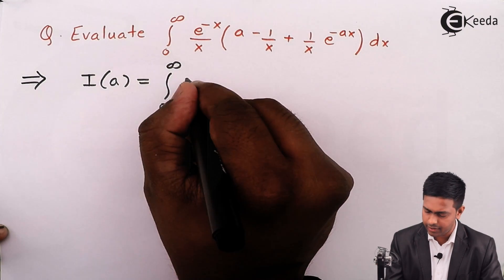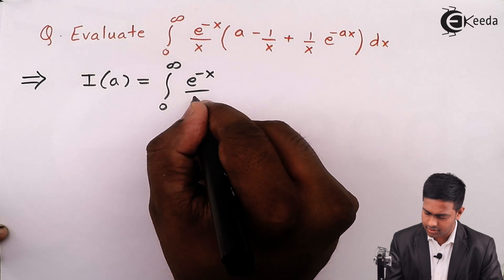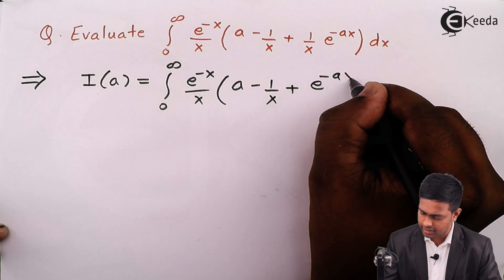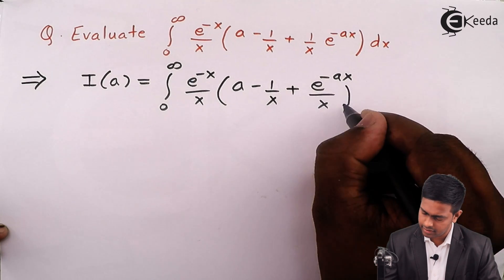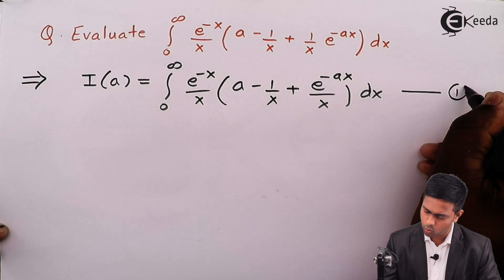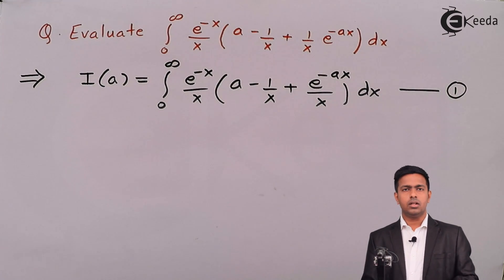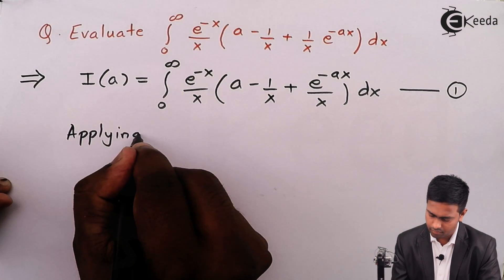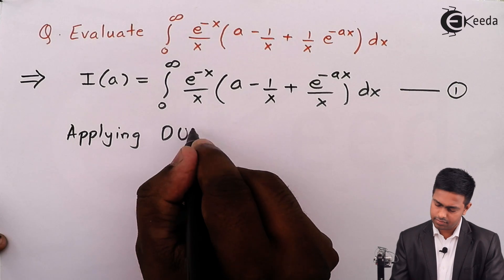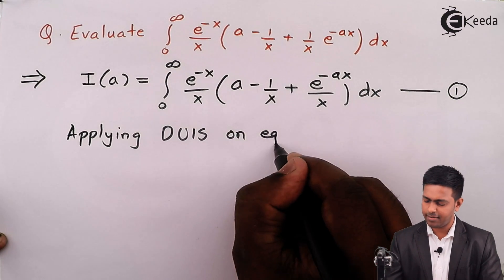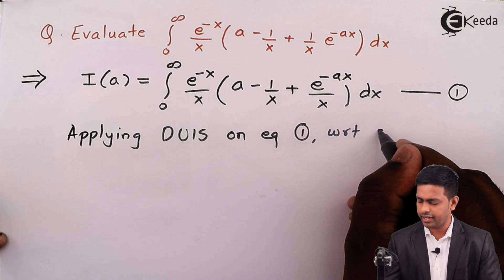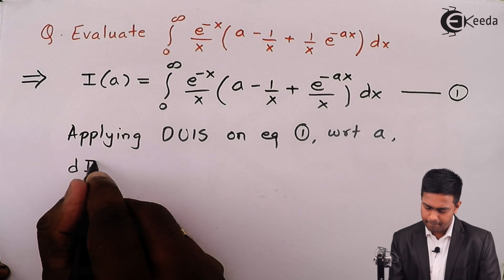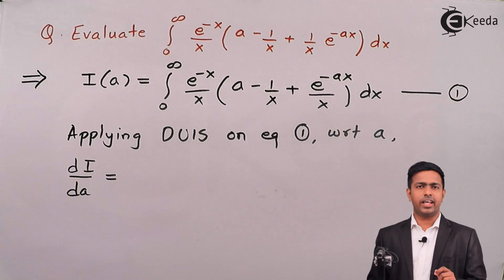I of a equals integration from 0 to infinity of e raised to minus x upon x times (a minus 1 upon x plus e raised to minus ax upon x) dx — this is equation number one. Now applying DUIS on equation number one with respect to a.